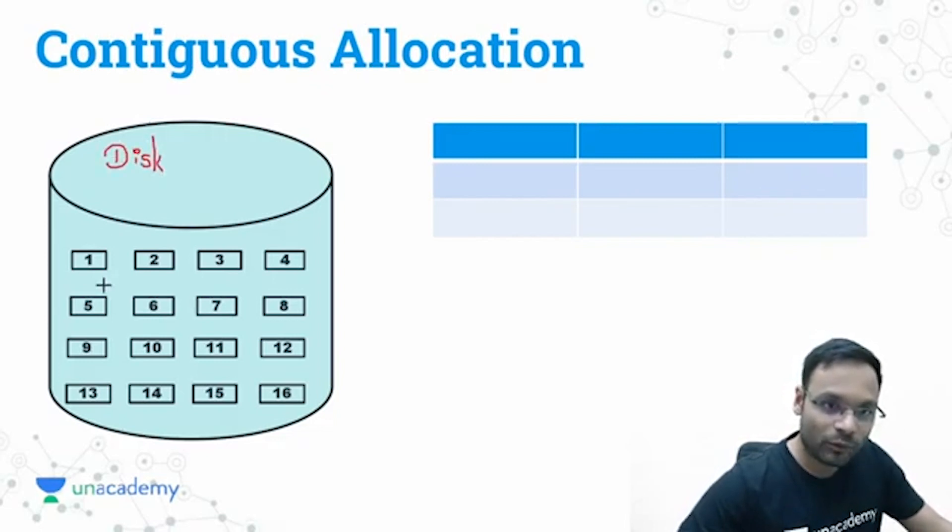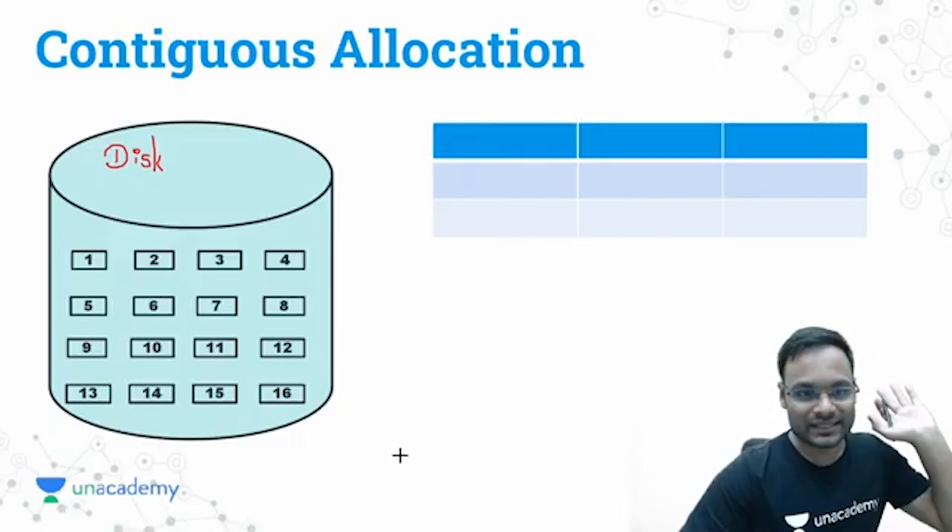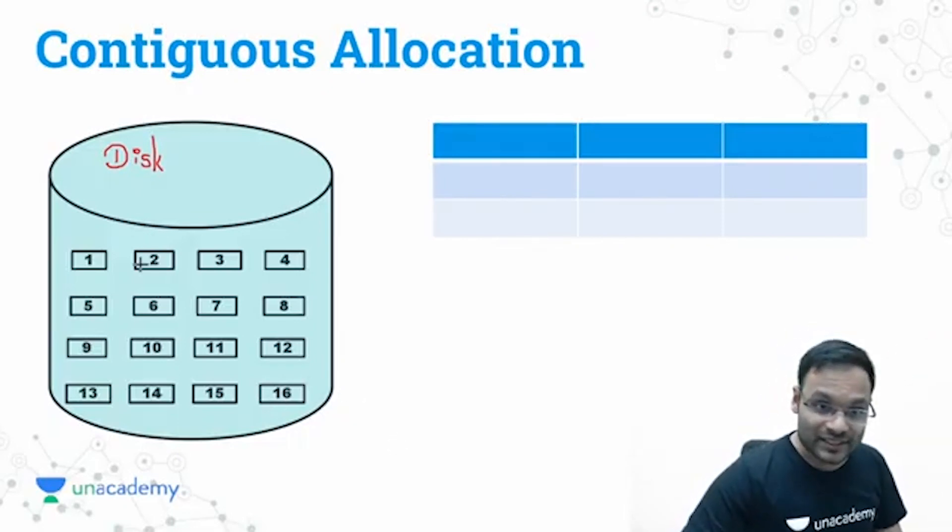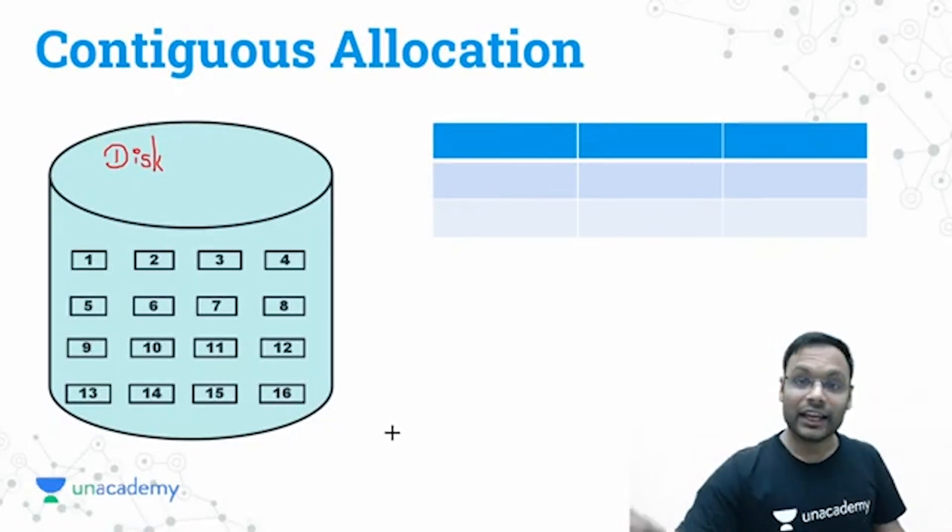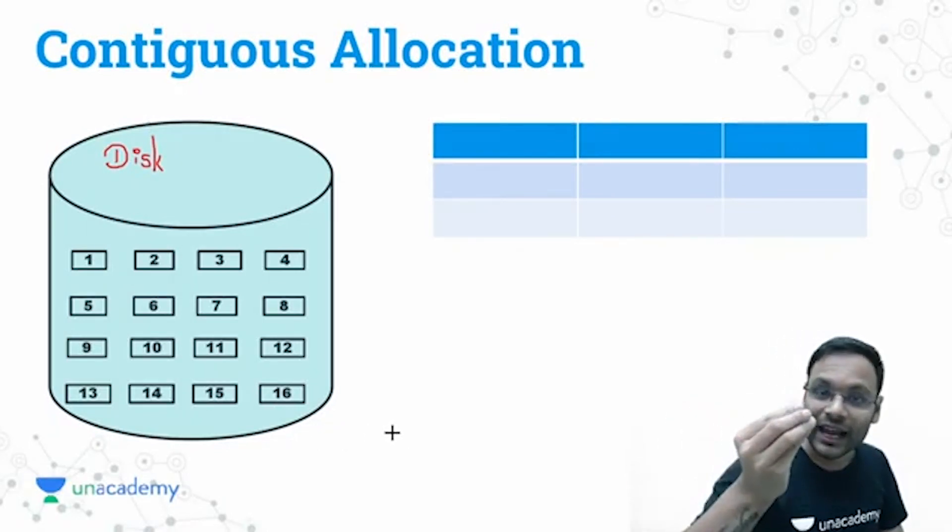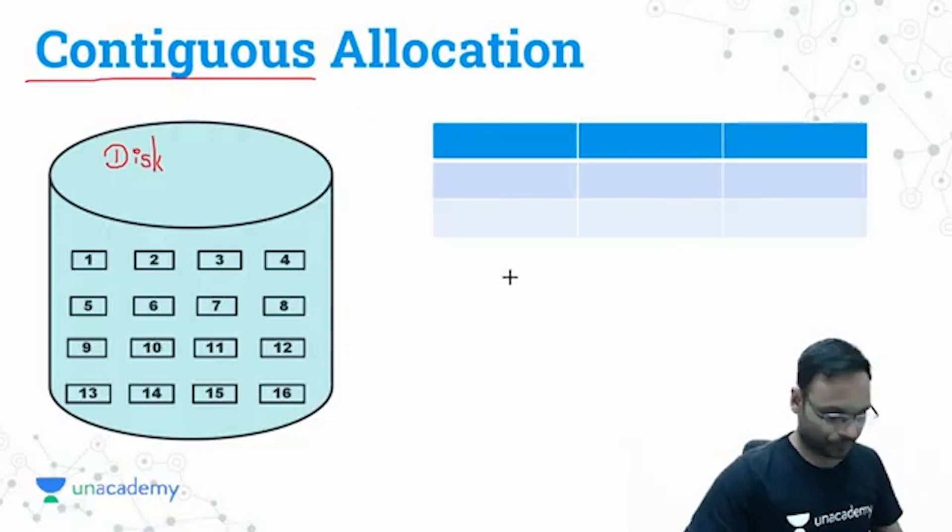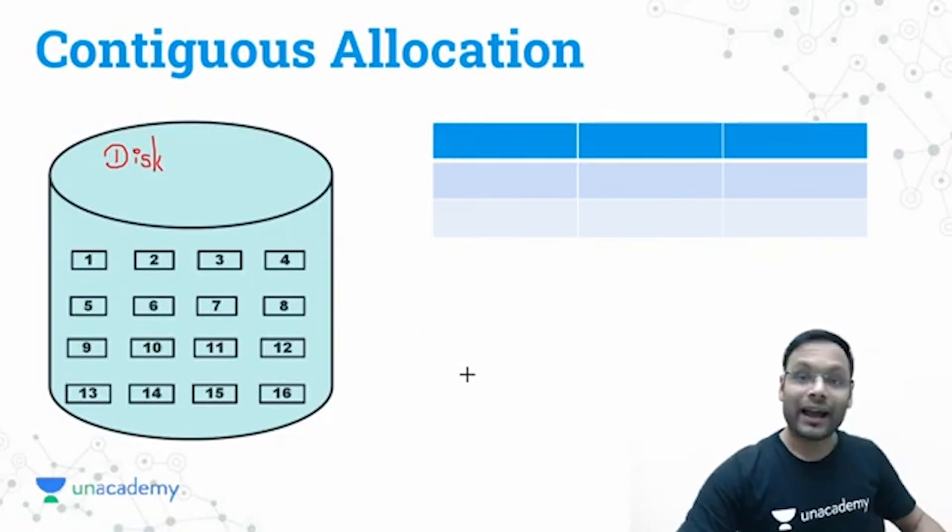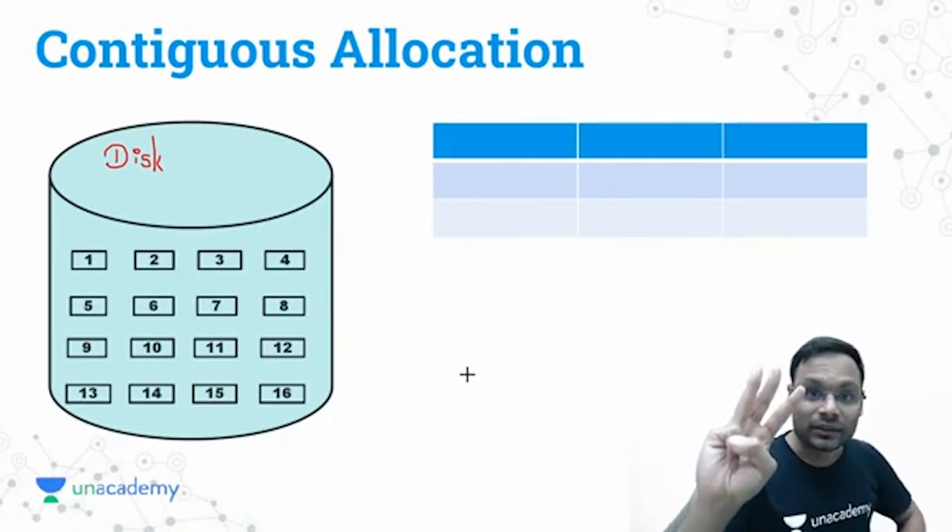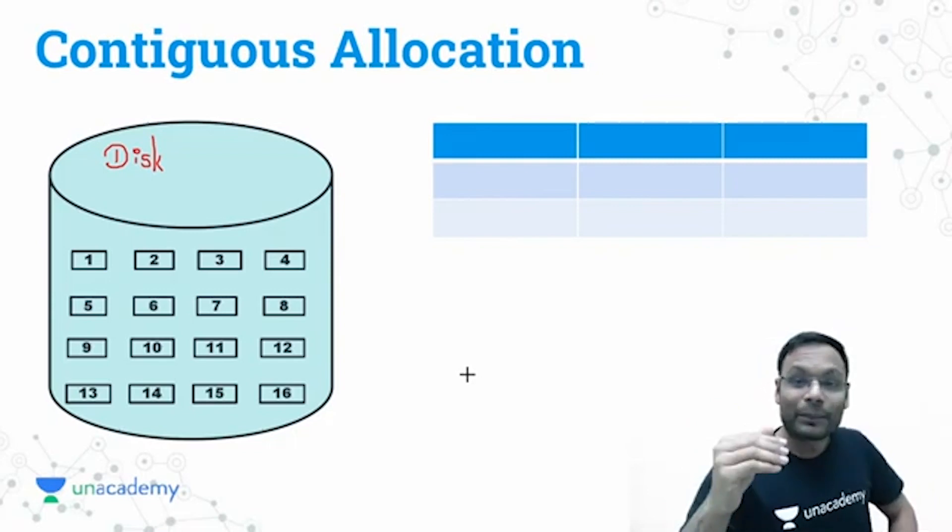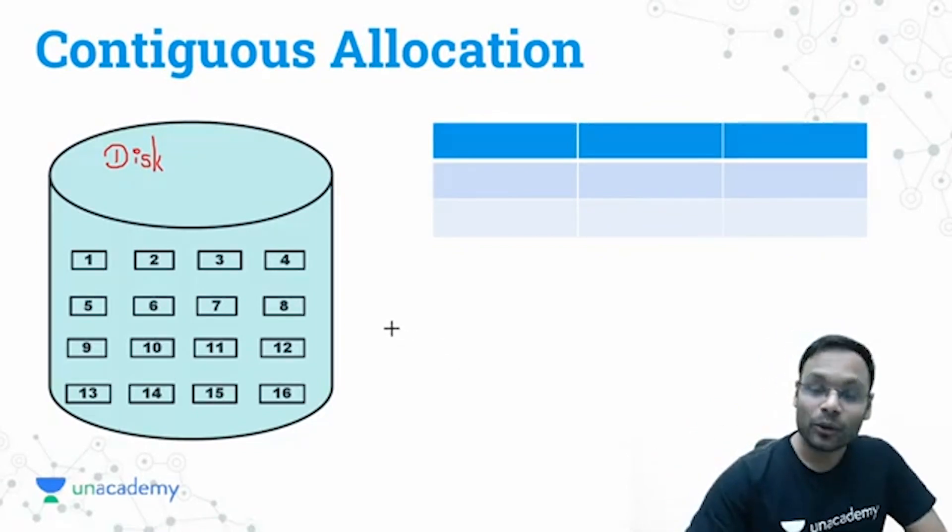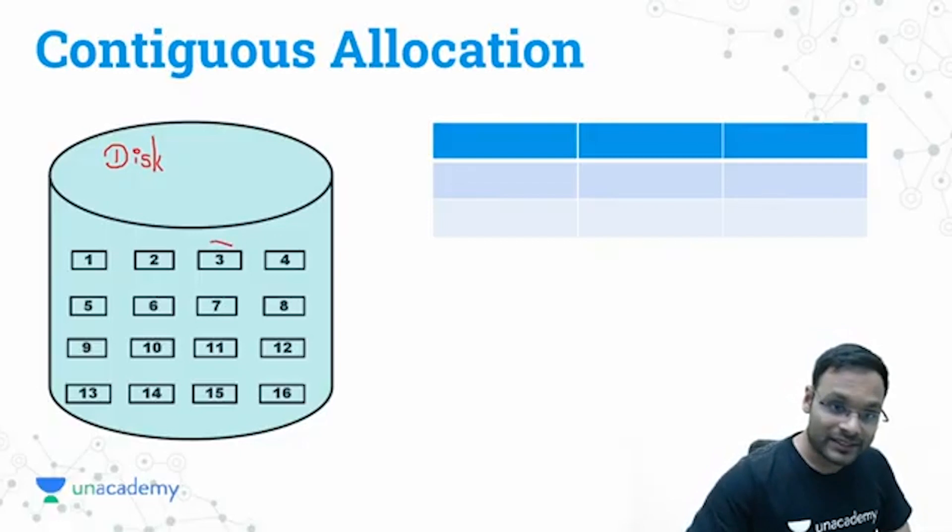I have considered that there is a disk, in that particular disk I have 16 number of blocks. I have given them numbering 1 to 16 for my understanding. Now in this disk, when we have 16 number of blocks, if the operating system will have to save a file, that particular file should be stored on contiguous blocks. Let's say there is a file that needs three blocks.